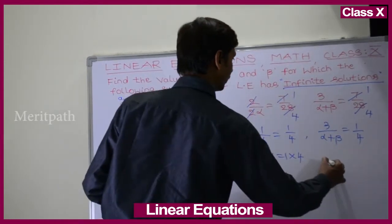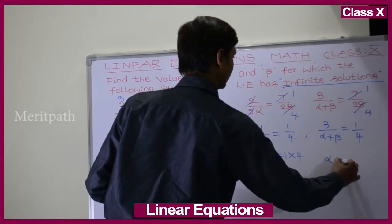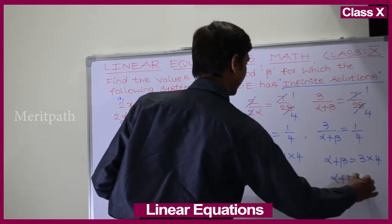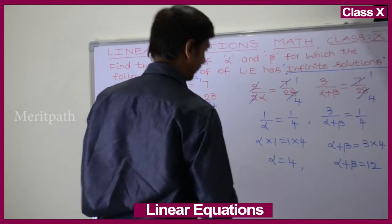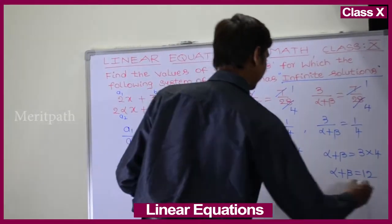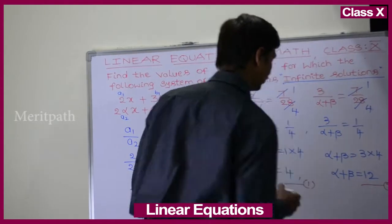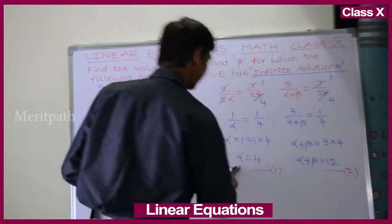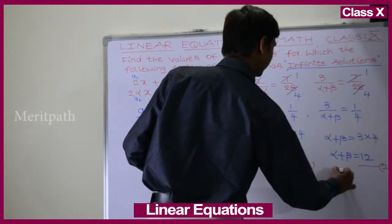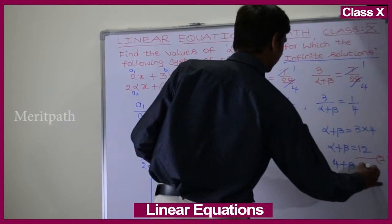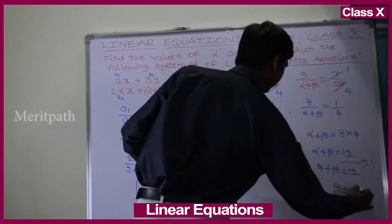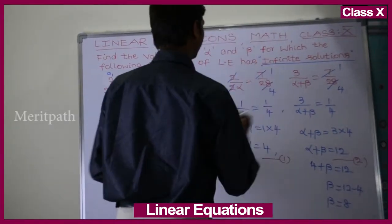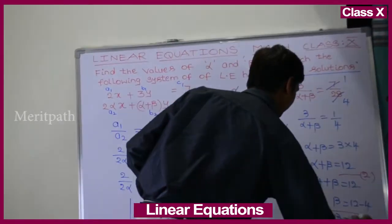By cross multiplication for the second equation: alpha plus beta equals 3 into 4, so alpha plus beta equals 12. Substituting alpha equals 4, we get beta equals 12 minus 4, which gives beta equals 8. So finally, alpha is 4 and beta is 8.